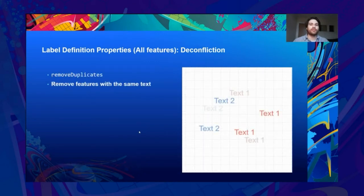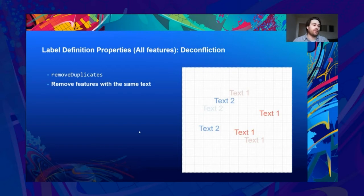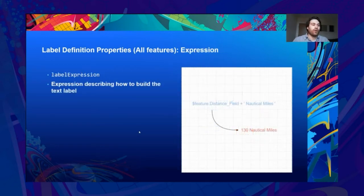Remove duplicates: removing labels with the same text effectively reduces the cluster on the screen if the features can be amalgamated. It's quite handy when labelling roads.